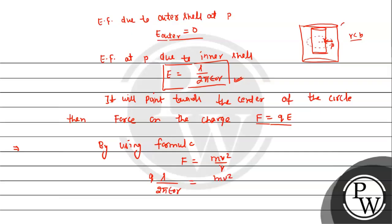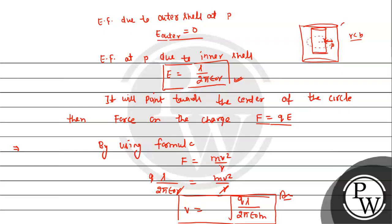Setting qE equal to mv²/r: q × λ / (2πε₀r) = mv² / r. Cancelling r from both sides and solving for v, we get v = √(qλ / 2πε₀m). This is the speed of the revolving charged particle.